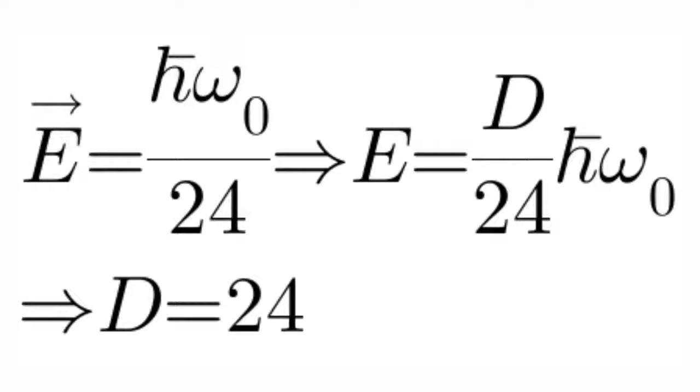Now you can interpret this as: if the energy in one direction of vibration is ℏω₀ over 24, then the vibration in d dimensions will be d by 24 ℏω₀. Now if you know that in string theory we quantify the matter, so we expect that energy is equal to ℏω₀ as we considered earlier.